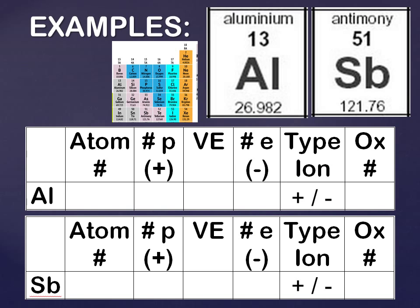So let's first talk about this review stuff — it might be a good idea to get your periodic table out. For aluminum, the atomic number is the whole number from the periodic table, so we're talking about 13. The number of protons equals the atomic number, so that would also be 13. For valence electrons, you find aluminum on the periodic table — it's in group 13, so that last digit gives us 3 valence electrons. Number of electrons equals number of protons for a neutral atom, so that's 13.